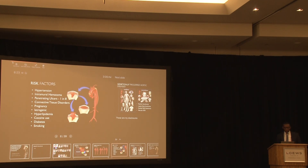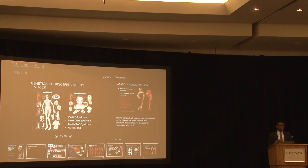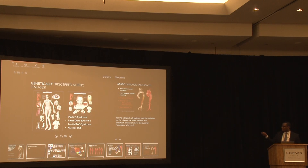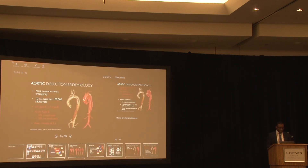Diabetes and smoking are also very important causes. There was a whole talk this afternoon about genetic diseases that cause aortic dissection — Marfan syndrome, Loeys-Dietz, EDS — so I won't go into detail on those here.